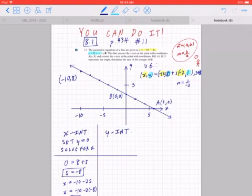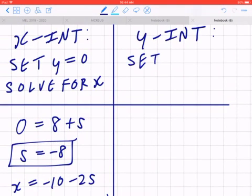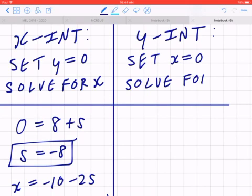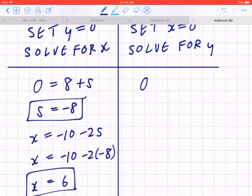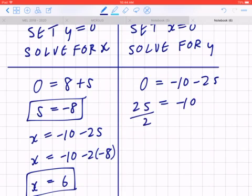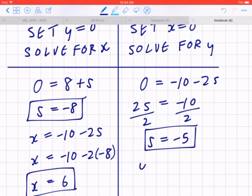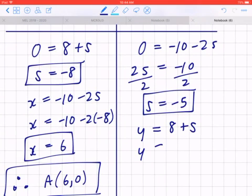Now, likewise, if you look at the y intercept, in general you always set x equal to 0 and you solve for y. So step one, if you plug x to be 0, that means 0 equals negative 10 minus 2s. To find s, you can bring negative 2s to the left-hand side. The opposite of multiplying by 2 is to divide by 2, so s is going to be negative 5. You plug it back in, so y equals 8 plus s. And if you plug in negative 5, that's going to be 8 minus 5, so y equals 3.